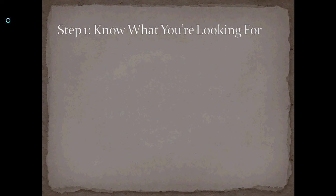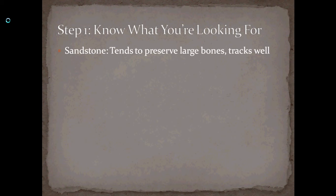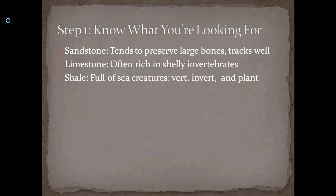Part of this is because different rocks have different types of fossils in them. Sandstones tend to preserve large bones and tracks well. Limestones are often rich in shelly invertebrates. Shales are full of sea creatures — vertebrates, invertebrates, or plants. Shales can also have trackways in them or show evidence of burrowing creatures chewing up the ooze on the bottom of the ocean.